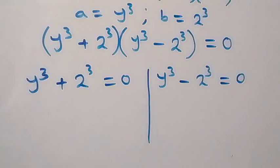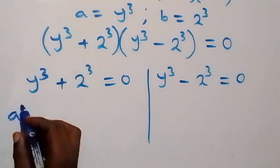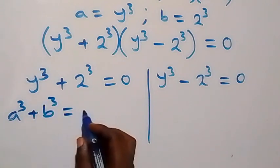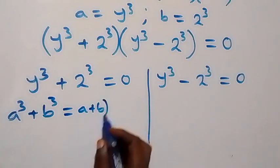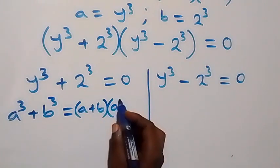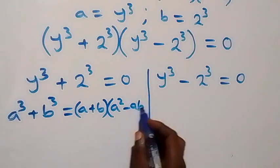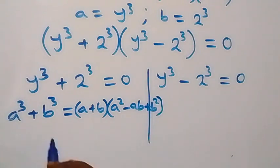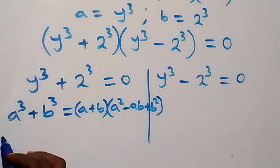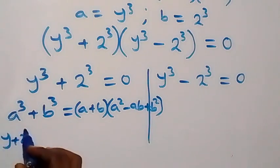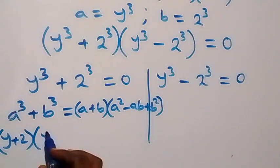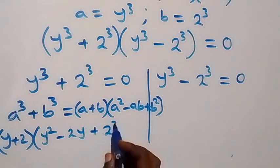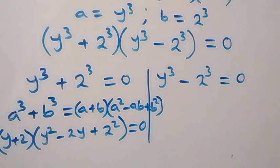From the first part, this follows from the identity a cubed plus b cubed, which can be written as (a + b)(a² - ab + b²). Following this identity, what we have now becomes: (y + 2)(y² - 2y + 2²) equals to zero.